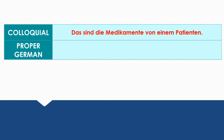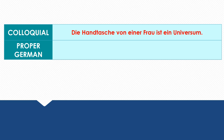Next sentence: 'Das sind die Medikamente von einem Patienten.' The genitive form would be: 'Das sind die Medikamente eines Patienten.' Next sentence: 'Die Handtasche von einer Frau ist ein Universum.' In proper German using the genitive case: 'Die Handtasche einer Frau ist ein Universum.'